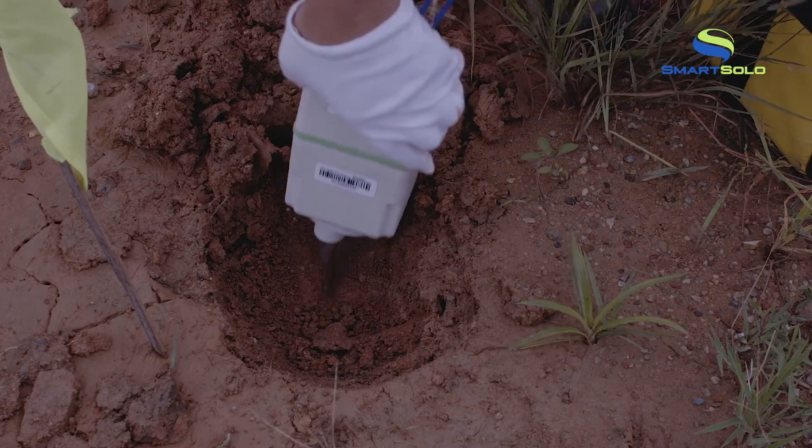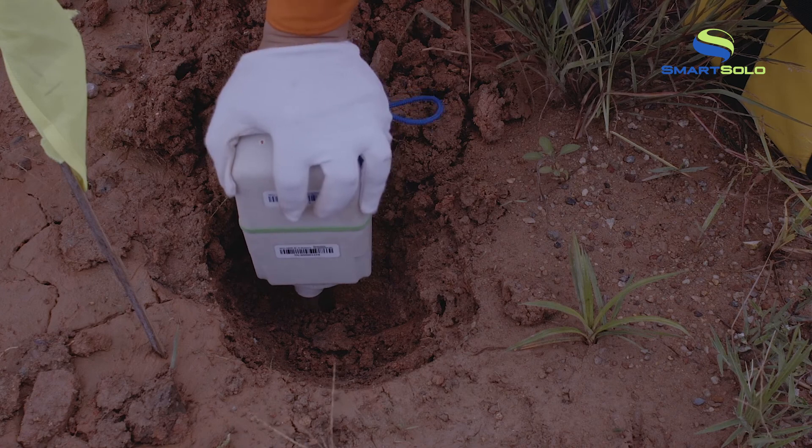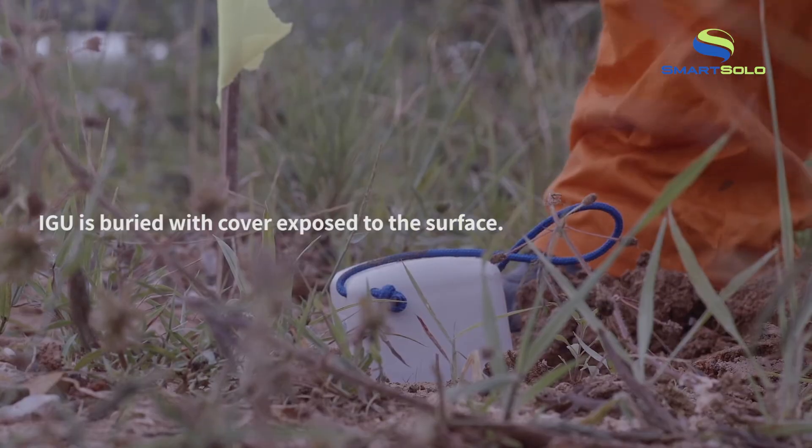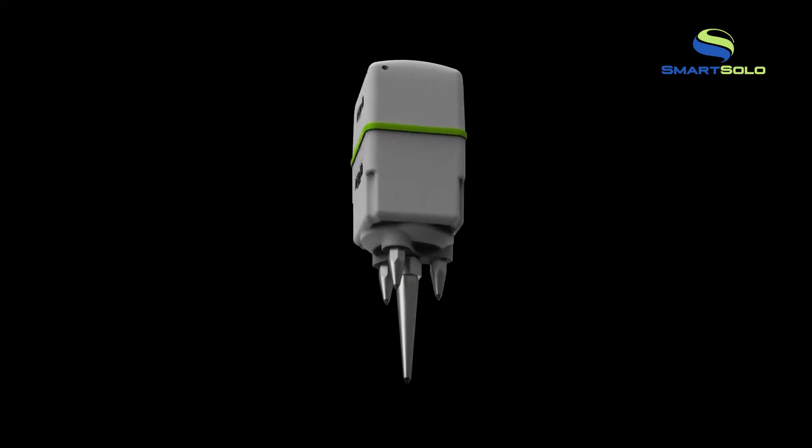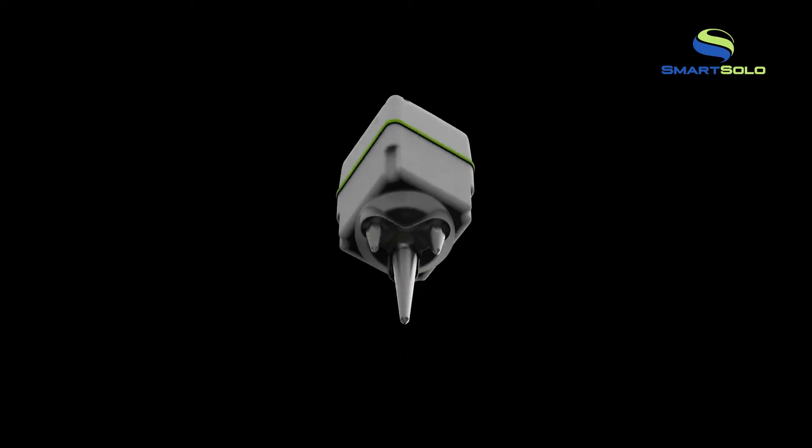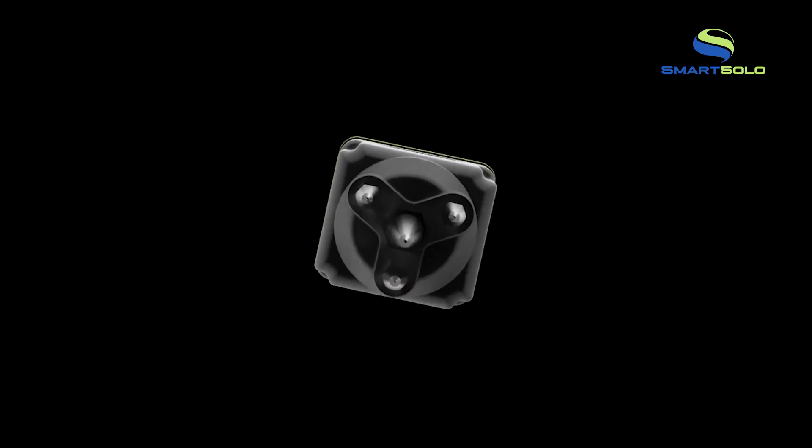The integrated design makes the IGU-16HR3C easy to bury, which helps avoid human and field interference. Our spike design with four conical spikes allow for a more rigid and stable contact with any ground condition, ensuring good coupling.